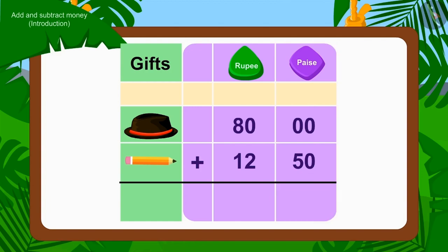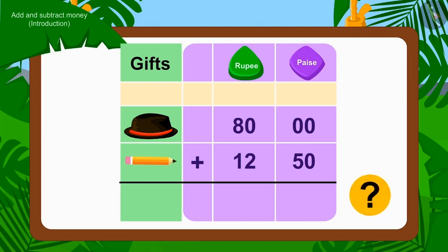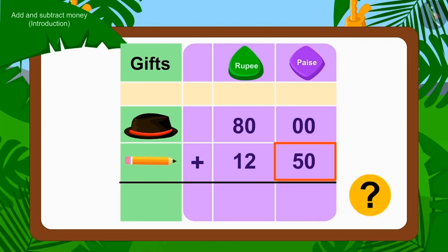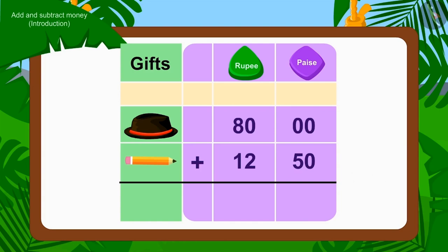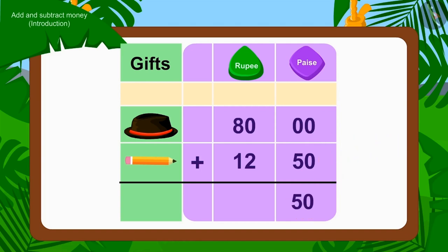First, we will add the numbers of paise. Is there an amount of paise in the cap price? No. Is there any paise in the price of a pencil? Yes! 50 paise. How much paise will there be if you add 50 paise to 0 paise? Exactly! 50 paise.